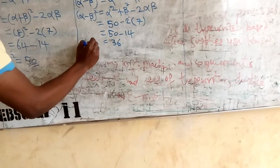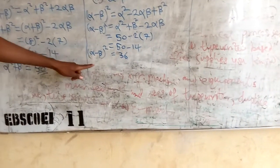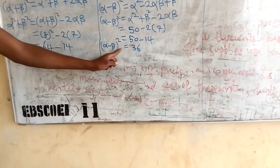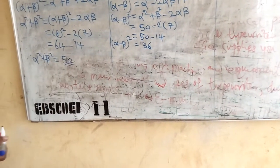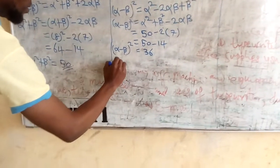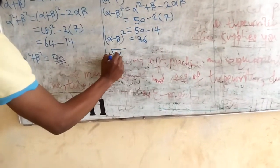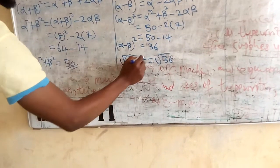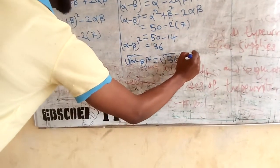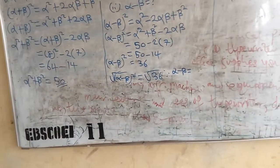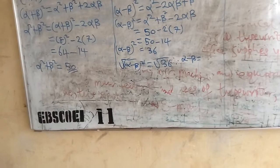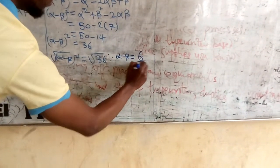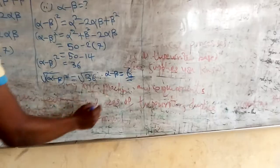This is (alpha minus beta) squared. But the question says find alpha minus beta, not (alpha minus beta) squared. So, to get alpha minus beta, we are going to take the square root of both sides. The square root of 36 is equal to 6. Therefore, alpha minus beta is equal to 6.